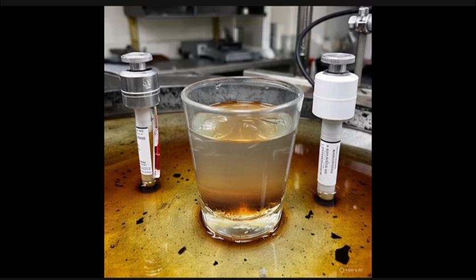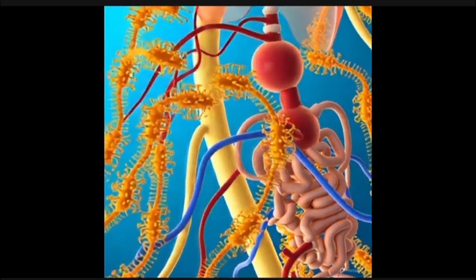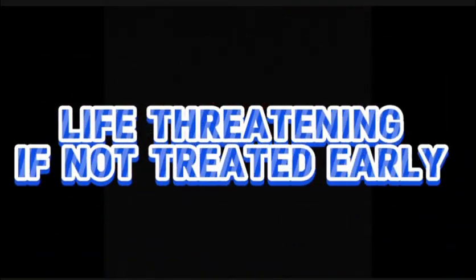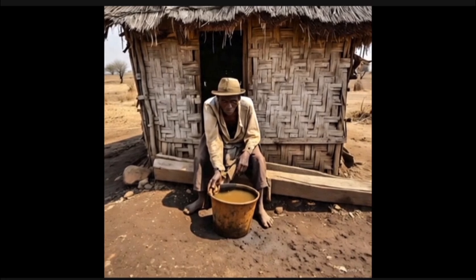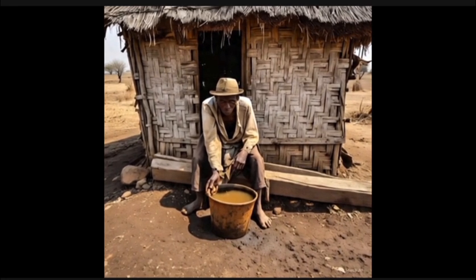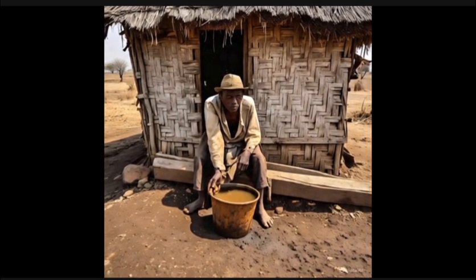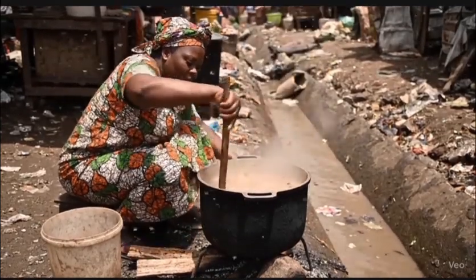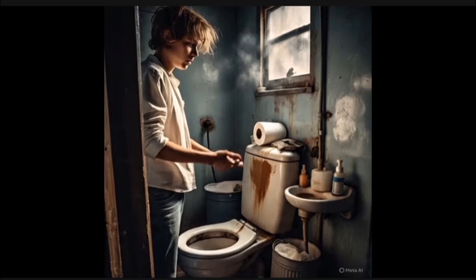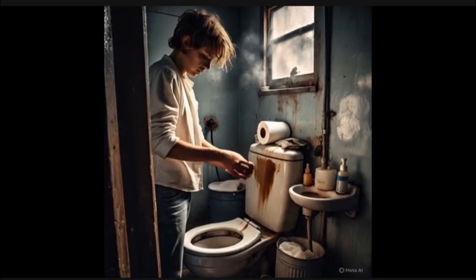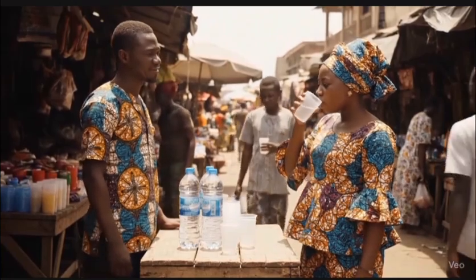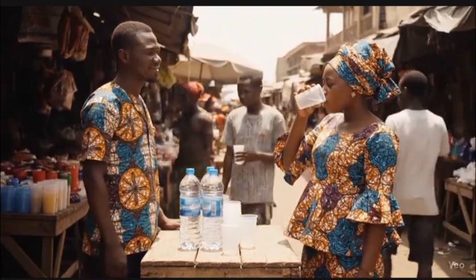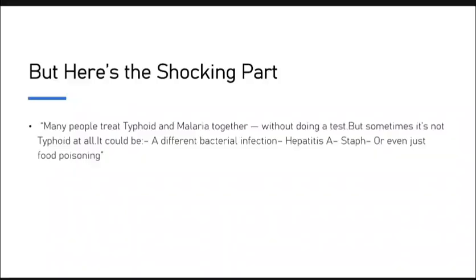Typhoid fever is a serious illness caused by Salmonella typhi, a bacteria that spreads through contaminated food and water. It affects your digestive system and blood, and can become life-threatening if not treated early. You can get it from drinking untreated well or borehole water, eating food prepared with dirty water, poor hand hygiene after using the toilet, flies landing on your food, or even sharing water sachets in public places.